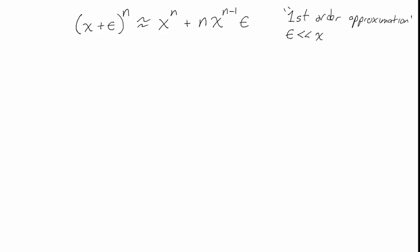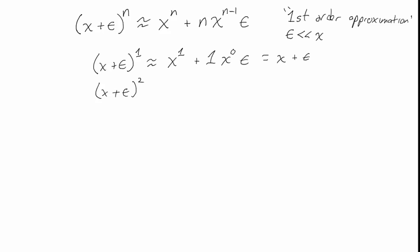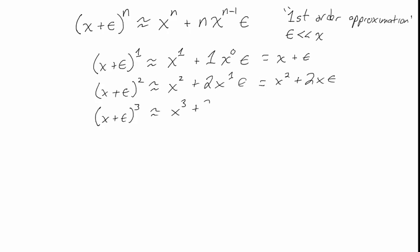When n is an integer this is straightforward. (x plus epsilon) to the first power is roughly x plus epsilon — that's not really an approximation. (x plus epsilon) squared is roughly x squared plus 2x epsilon, dropping the epsilon squared term since we're only keeping first order. And (x plus epsilon) cubed is approximately x cubed plus 3x squared epsilon. This is just the binomial expansion with higher order terms dropped.